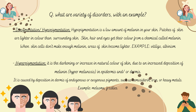Hyperpigmentation is the darkening or increase in the natural color of skin due to increased deposition of melanin, also called hypermelanosis. It can be seen in the epidermis or dermis and is caused by deposition in the dermis of endogenous or exogenous pigments such as hemosiderin, iron, or heavy metals. Examples include melasma and freckles.